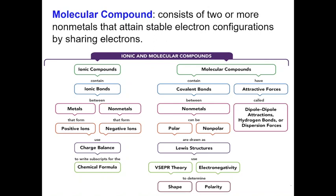Molecular compounds basically consist of two or more non-metals, and that gives them a stable configuration. They always consist of bonds called covalent bonds and only consist of non-metal elements. For example, CO2 — carbon is a non-metal, oxygen is a non-metal — so this compound is a molecular compound.